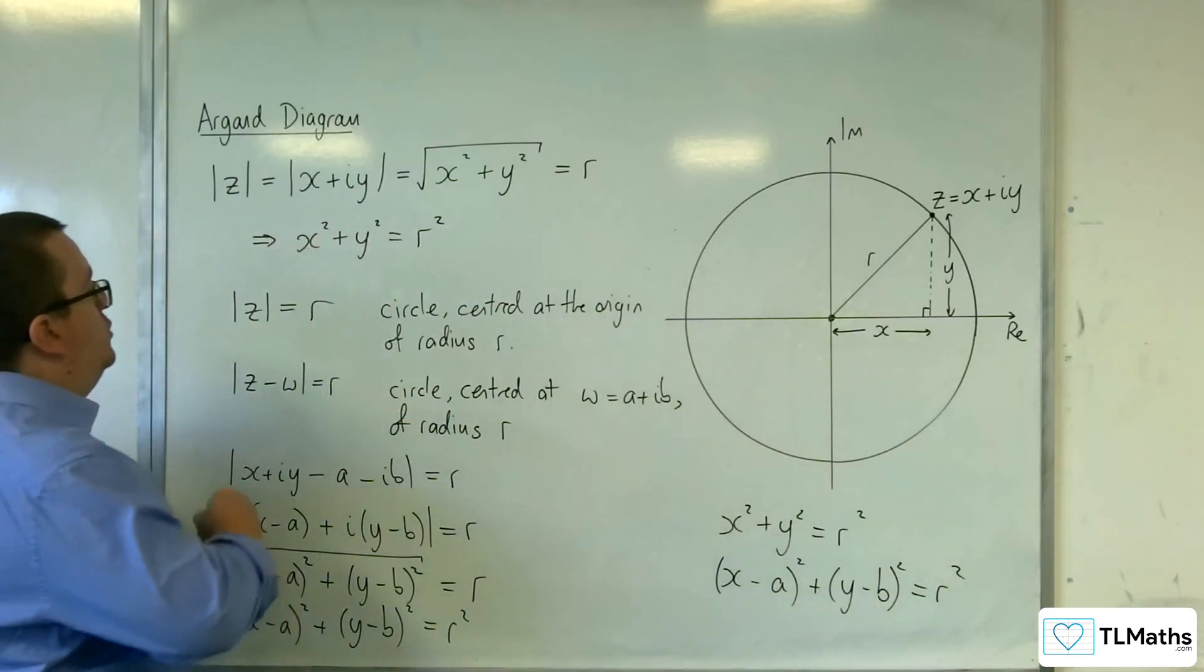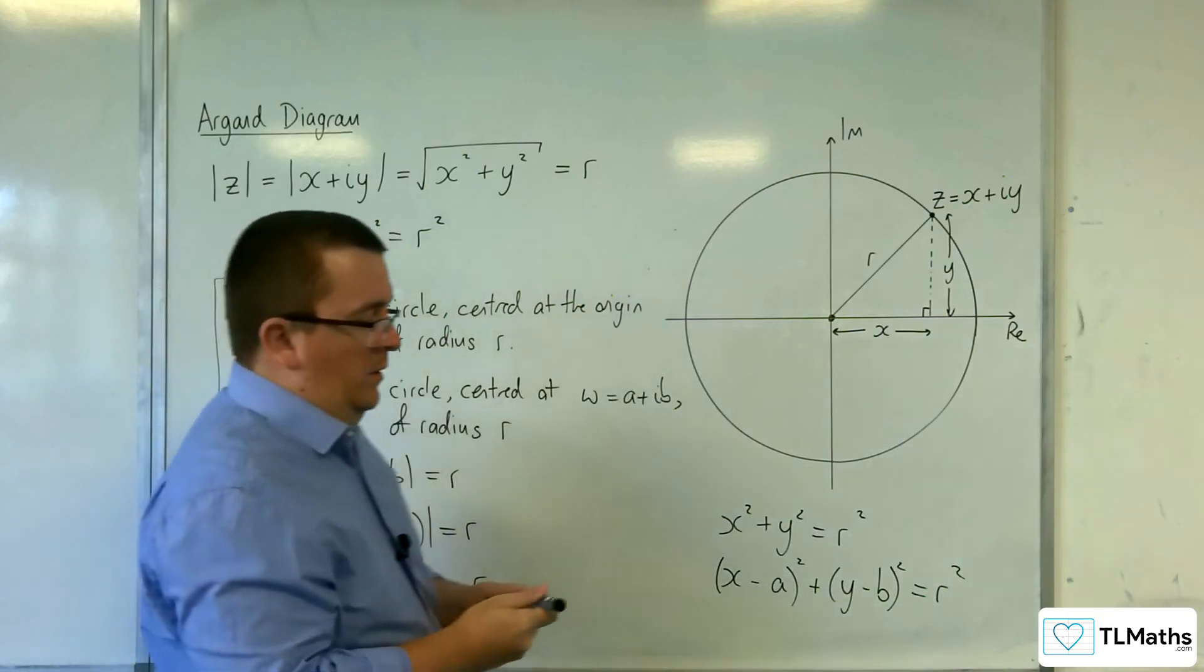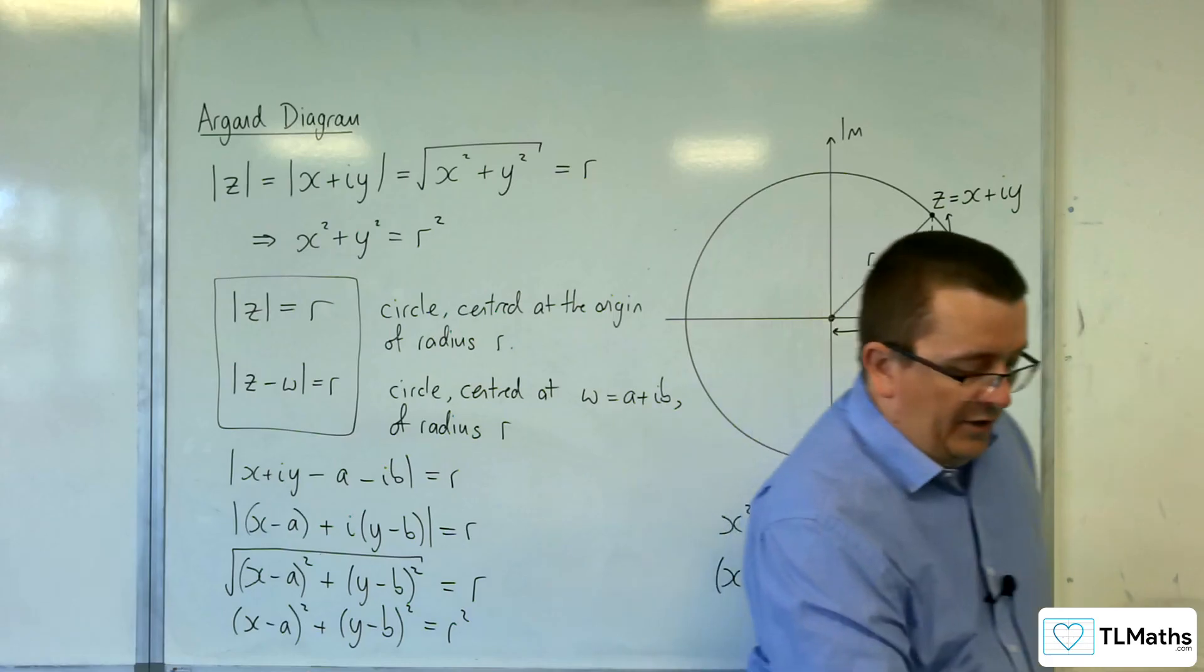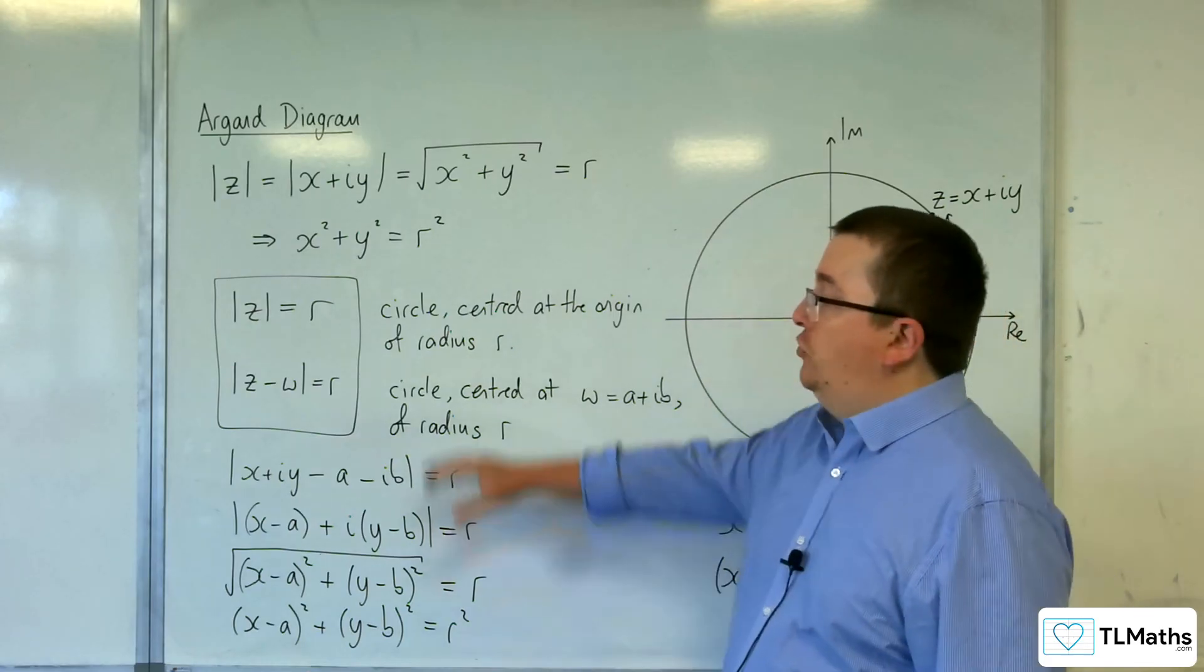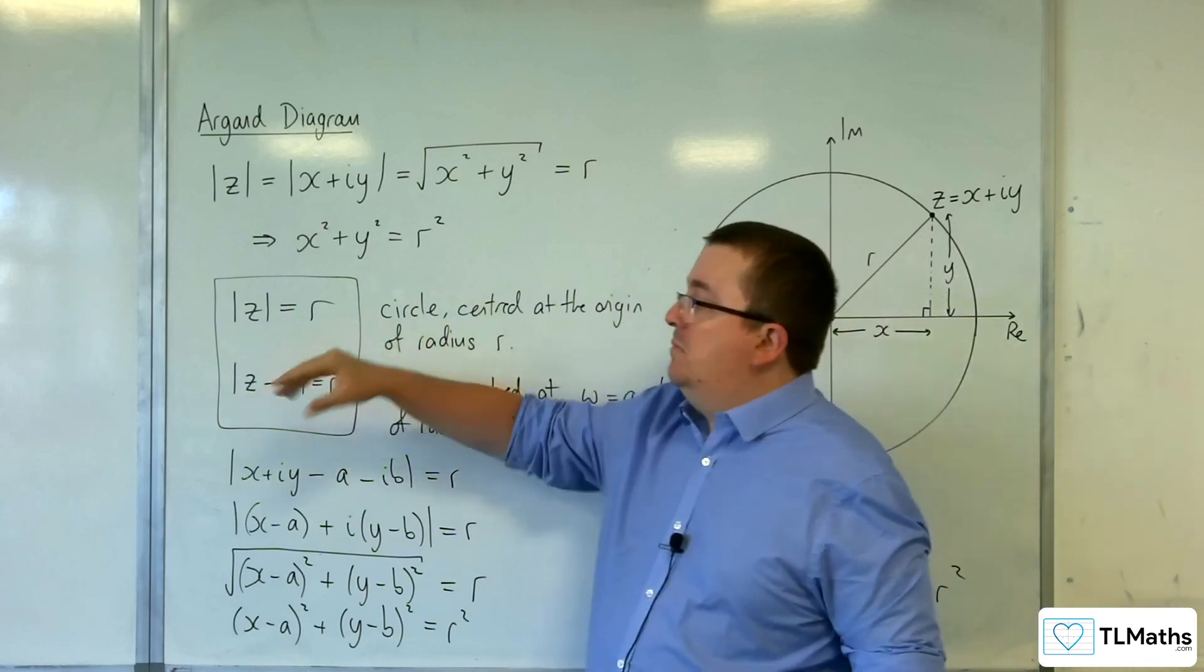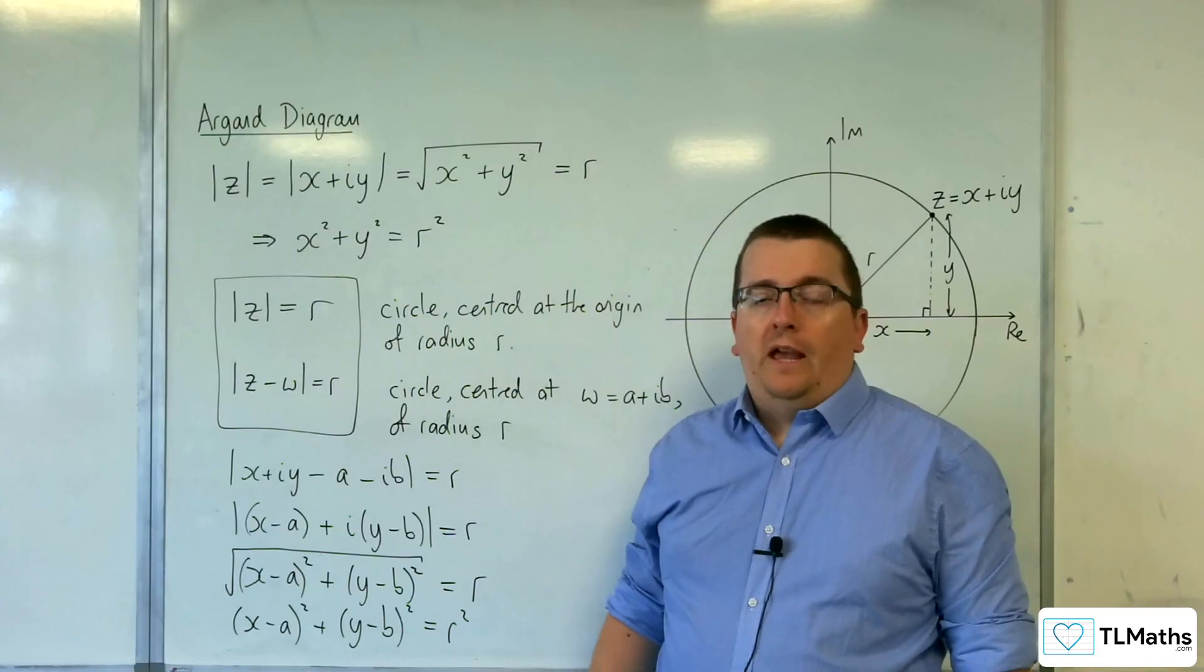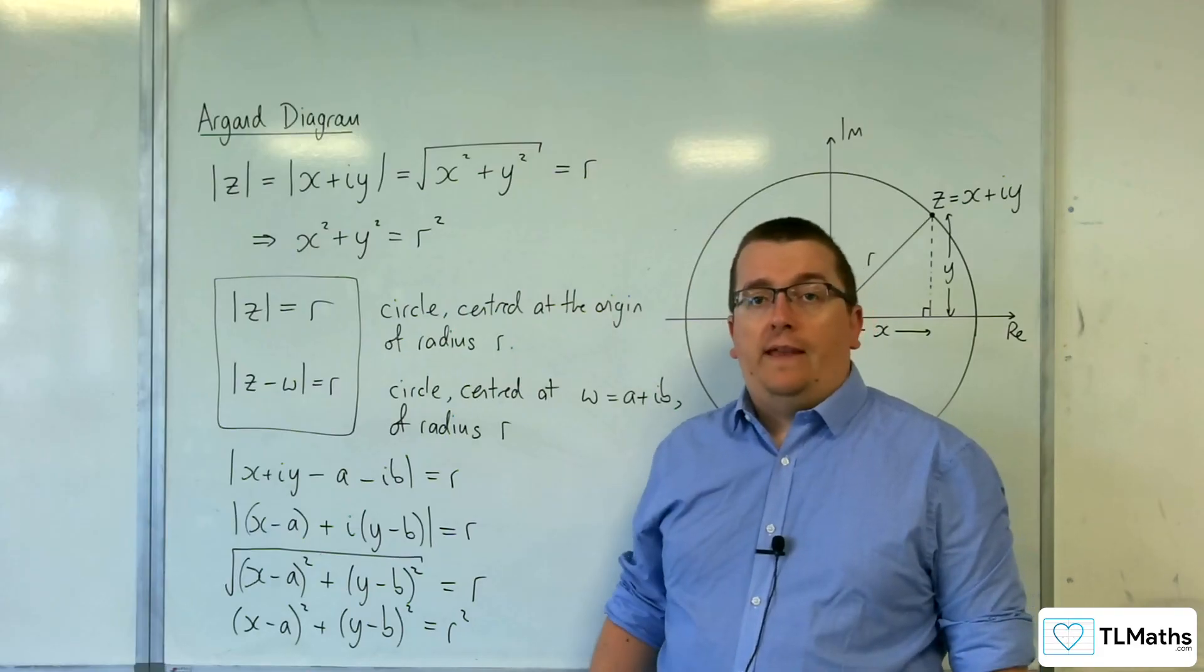So, these are your new forms for circles in the Argand diagram. They trace out the loci of a circle. And so, that's what you need to be able to spot in these types of questions. And we're going to go through some examples of these in the next video.